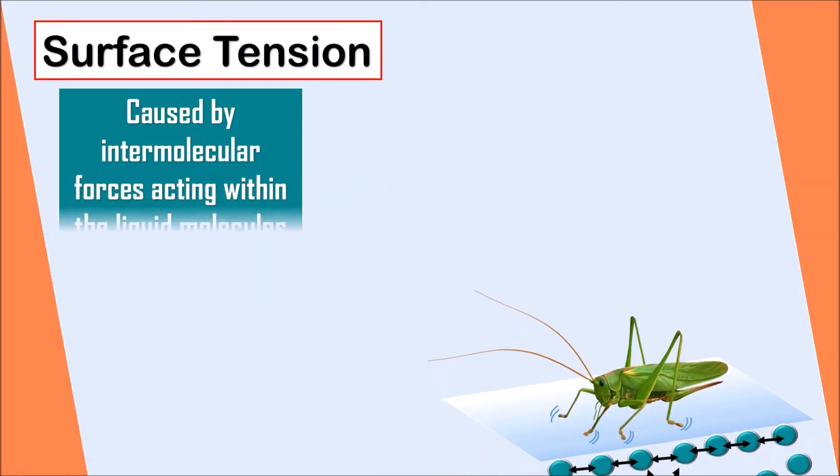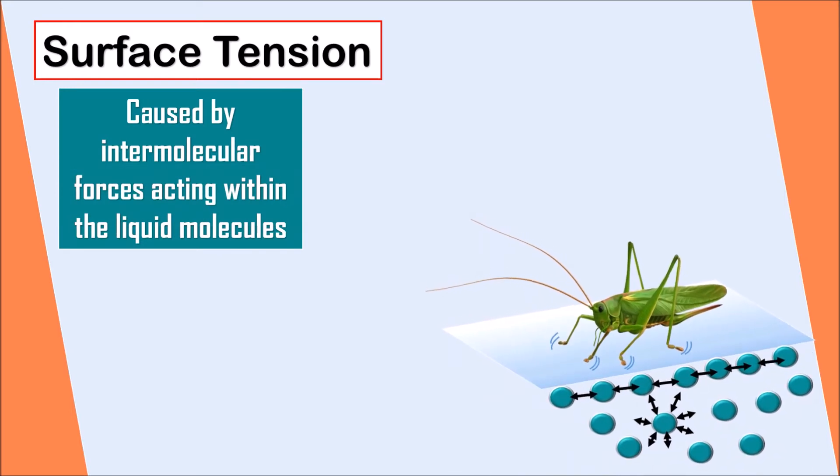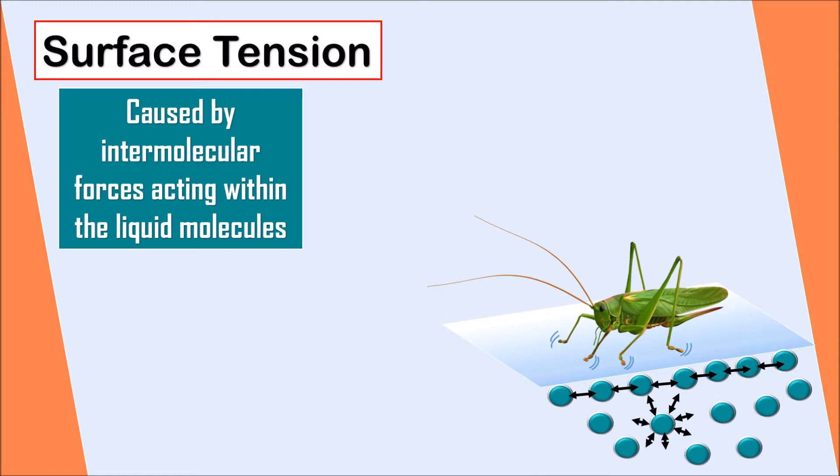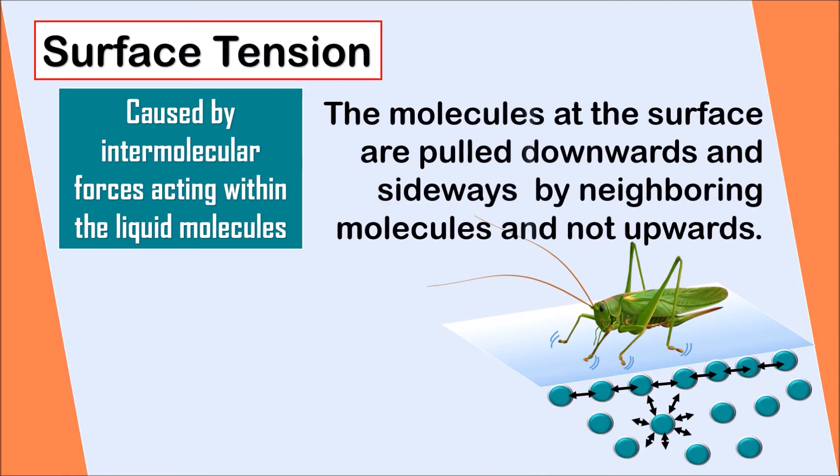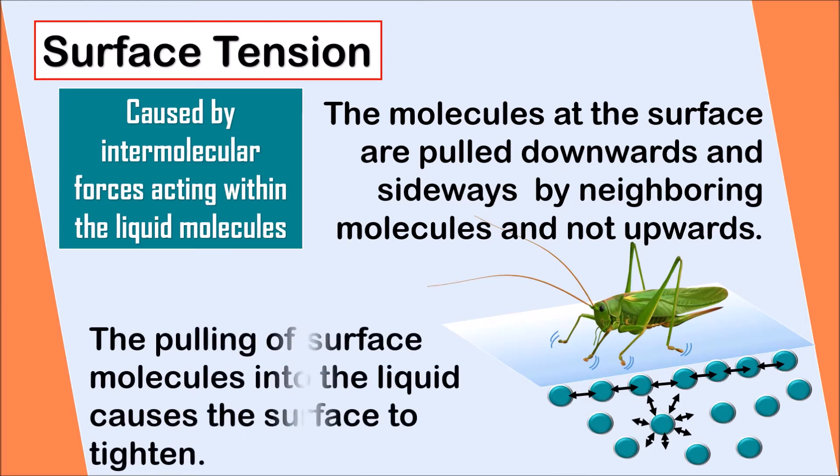Surface tension is caused by intermolecular forces acting within the liquid molecules. As we can see, the molecules at the surface are pulled downwards and sideways by neighboring molecules, but not upwards. Thus, the pulling of the surface molecules into the liquid causes the surface to tighten.